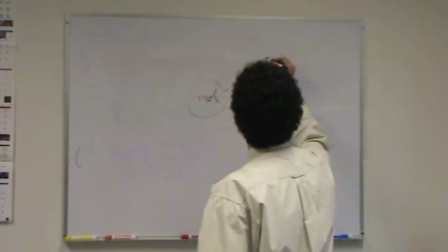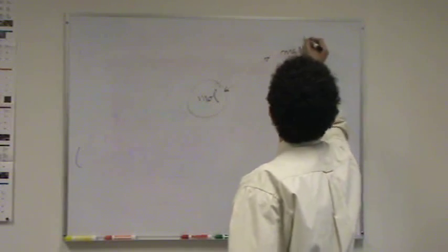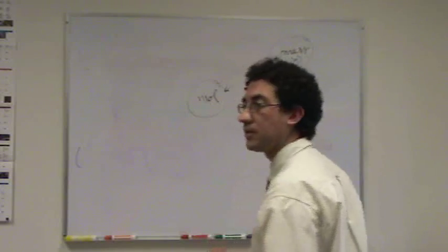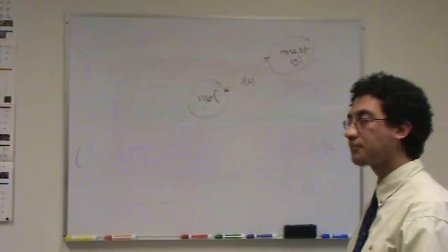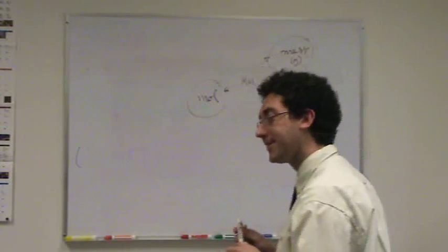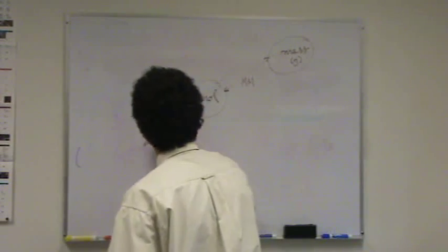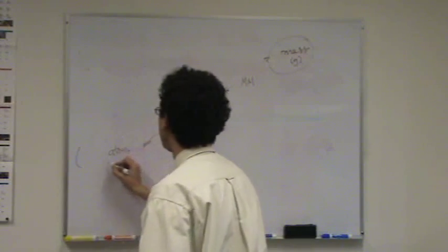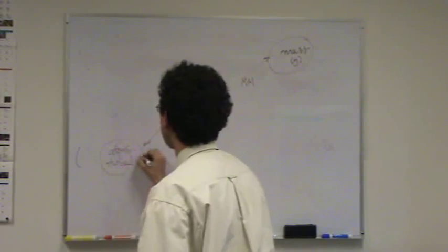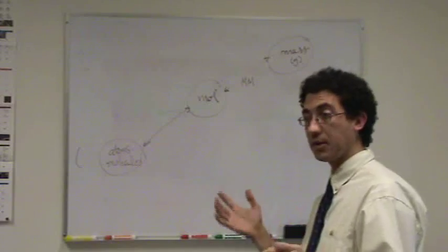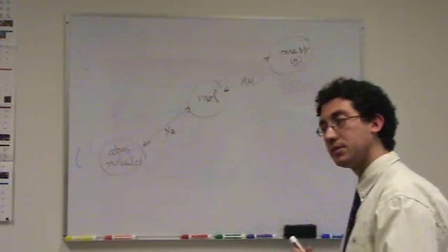You will occasionally want to go back and forth to mass, which in our case will be in grams. The only way to go back and forth is the molar mass. You will occasionally want to go somewhere else, which would be to atoms or molecules, whatever you prefer. And to do that, you must go through Avogadro's number.